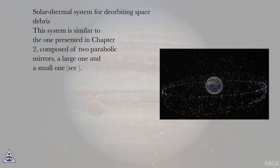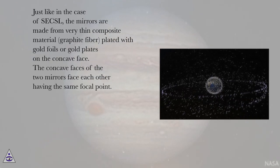Solar Thermal System for Deorbiting Space Debris. This system is similar to the one presented in Chapter 2, composed of two parabolic mirrors, a large one and a small one. Just like in the case of Sexyl, the mirrors are made from very thin composite material, graphite fiber, plated with gold foils or gold plates on the concave face.